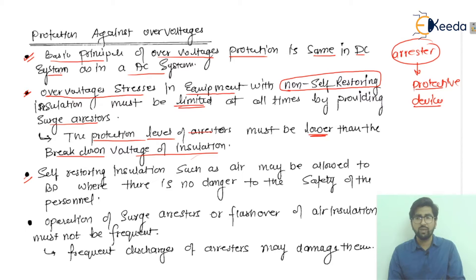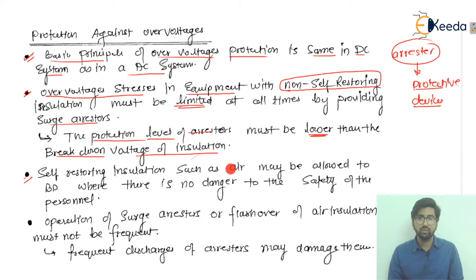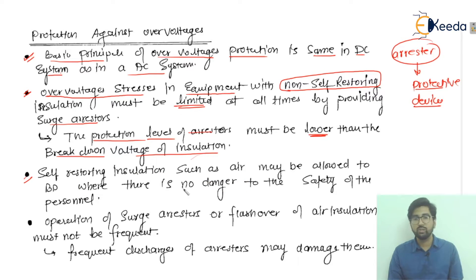Where no danger exists to persons operating manually, we generally take advantage of air, which is a self-restoring insulation. Breakdown may be allowed where there is no danger to the safety of the person.